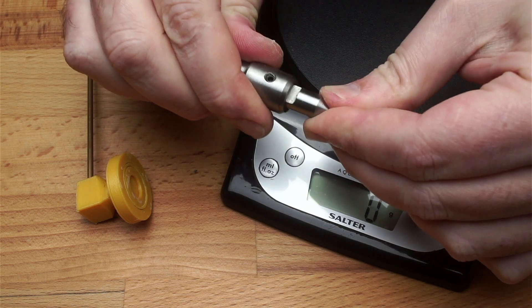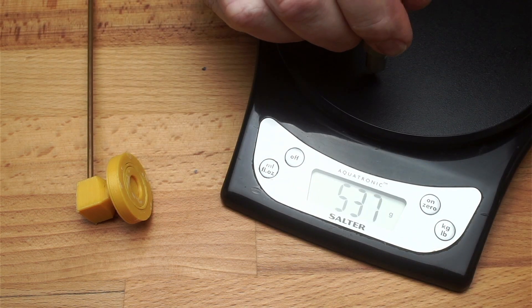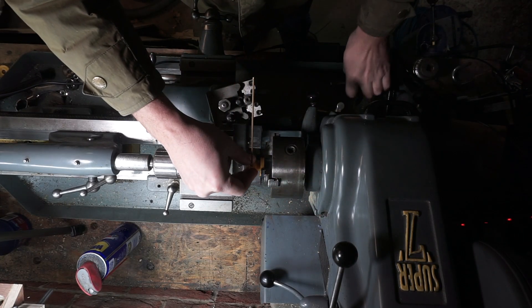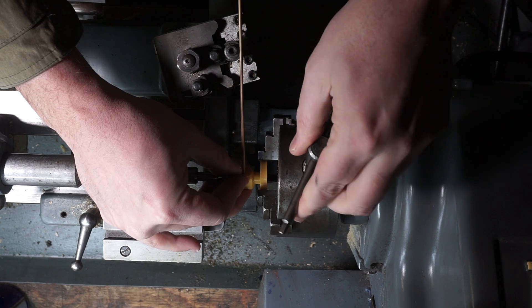I can then apply a fairly constant pressure to this using a sprung center. This has a spring inside, which applies a force of about 3.3kg. The outside of the bearing is then held in a chuck on my lathe, and the sprung center advanced using the tailstock.